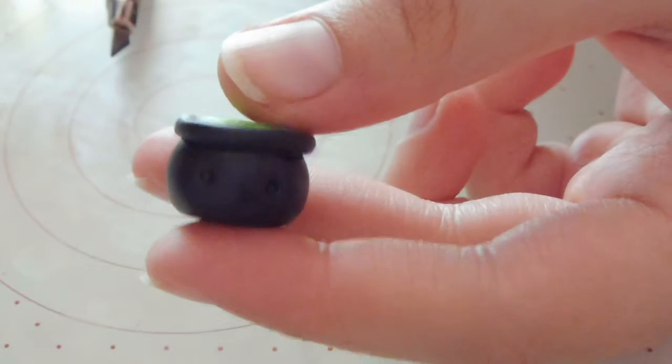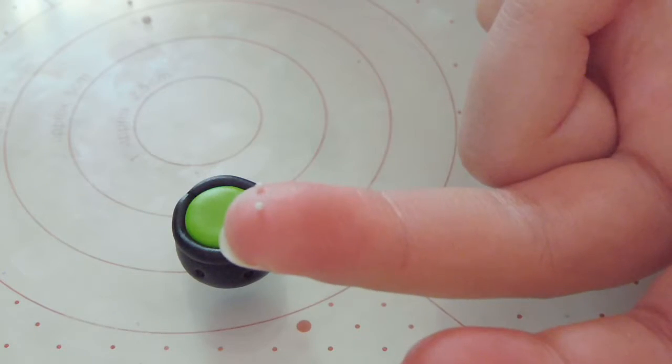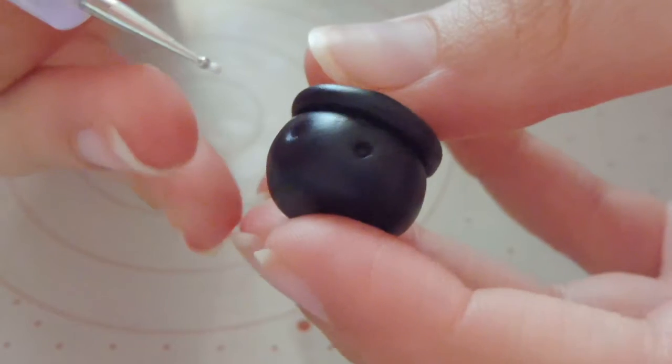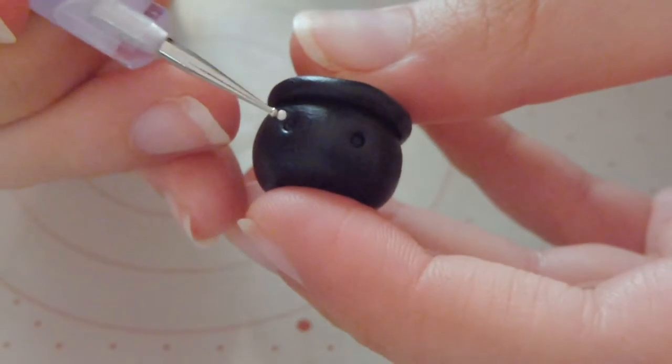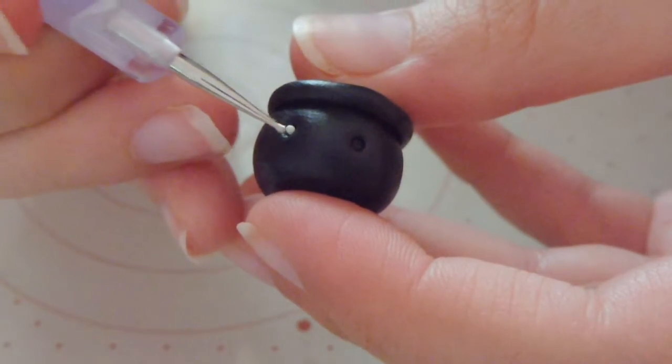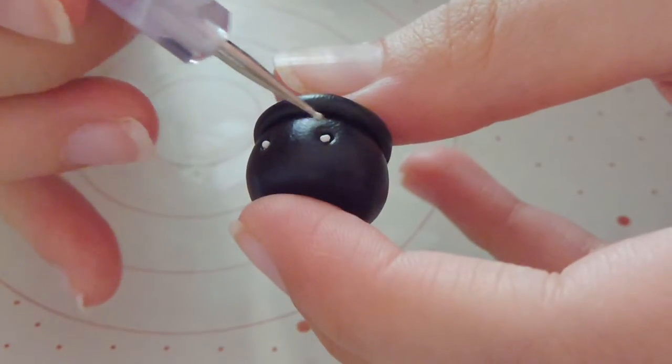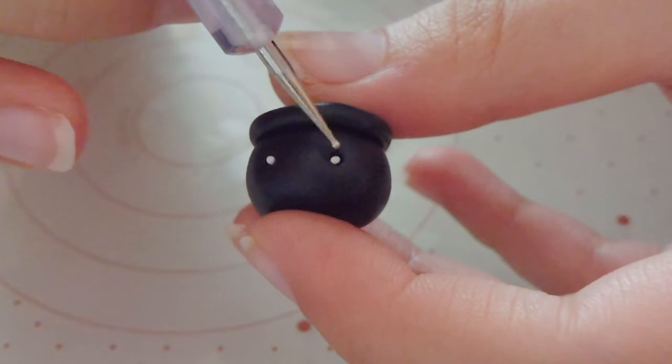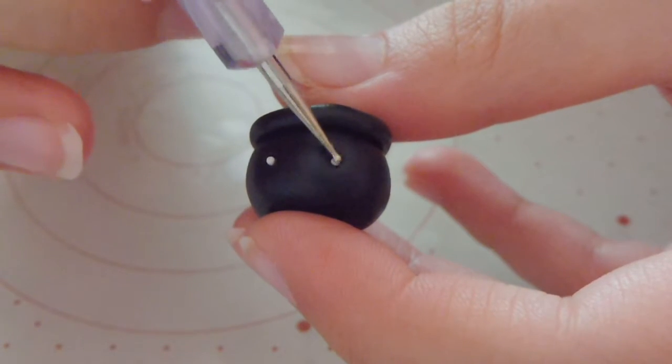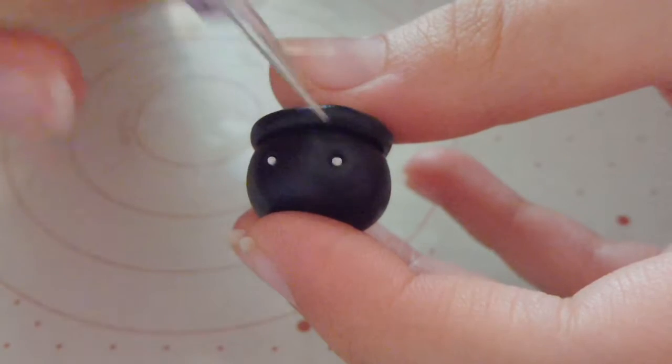I'm gonna make two tiny white balls of clay for the eyes, popping each one into each socket and just gently flattening into the hole with my bottle for security.